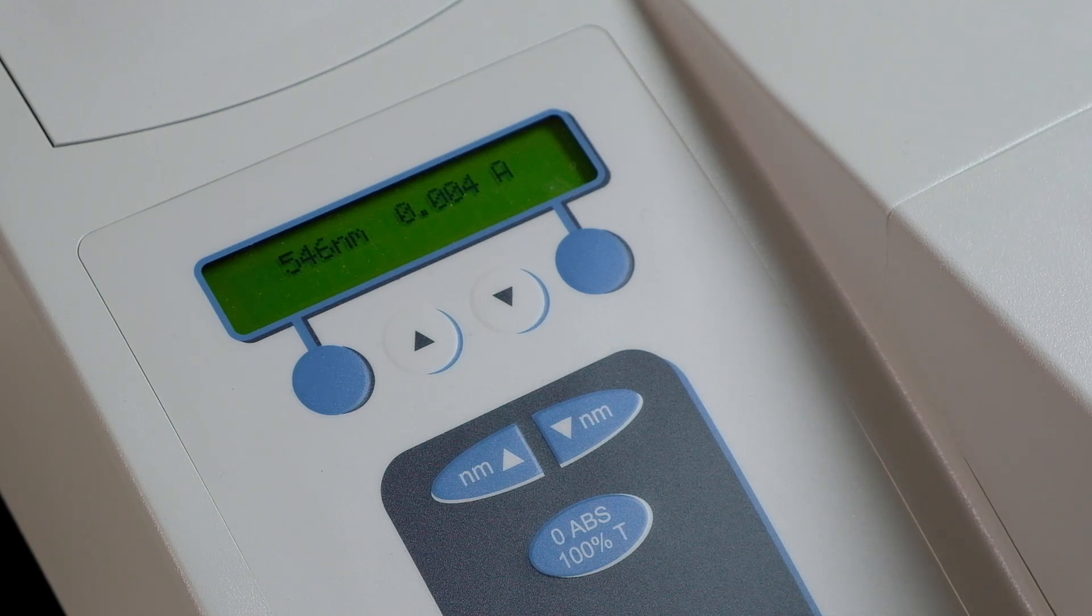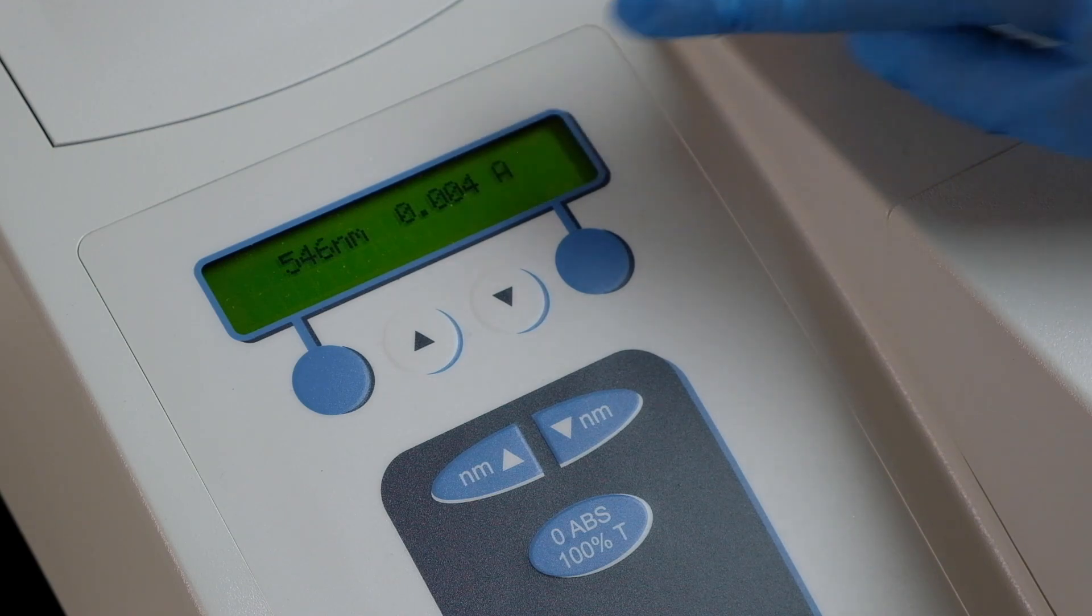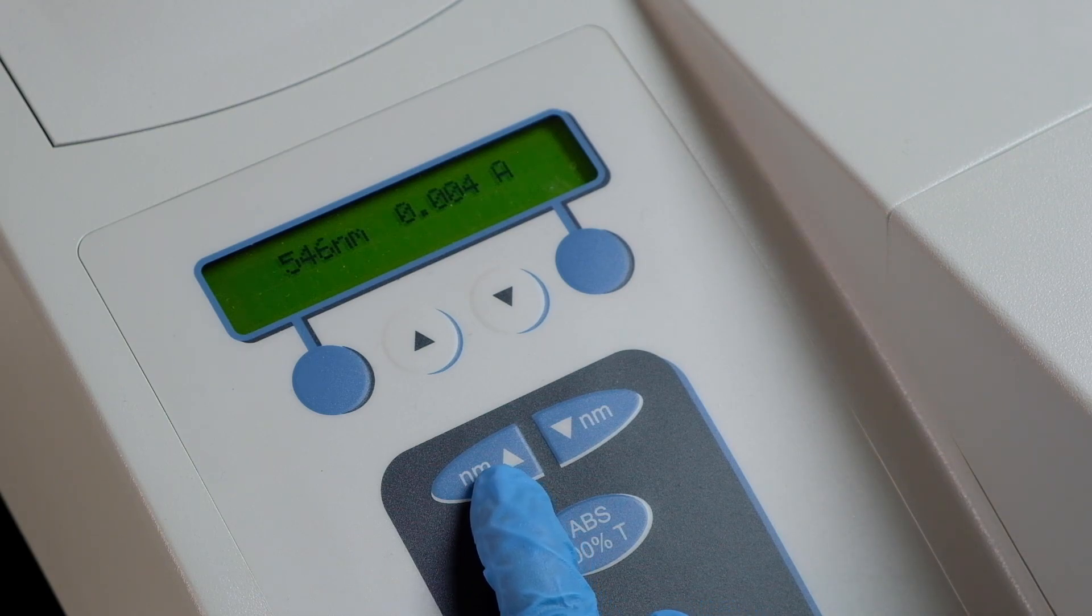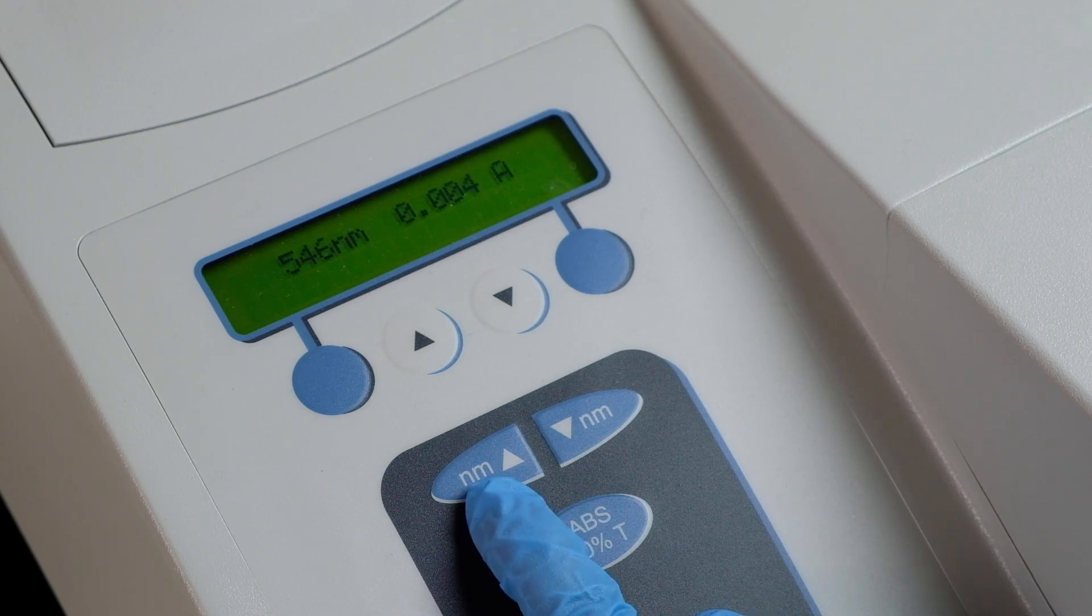With this, it's sufficiently warmed up already. First, you want to make sure that your setting is at A for absorbance. Second, you want to set your wavelength to the wavelength of choice. We start at the wavelength of 380 nanometers. So use the up or down buttons right here to adjust to the wavelength of choice.